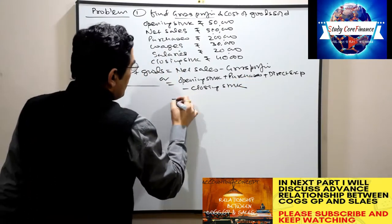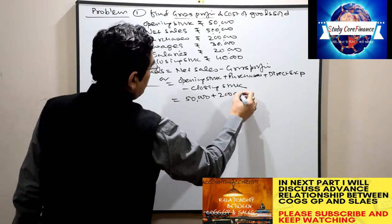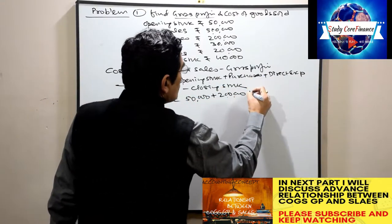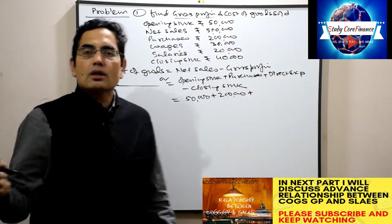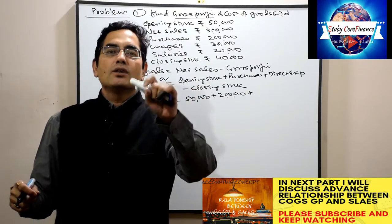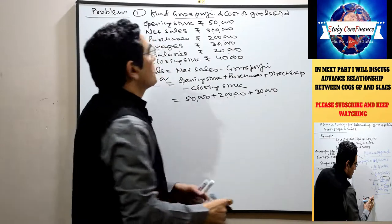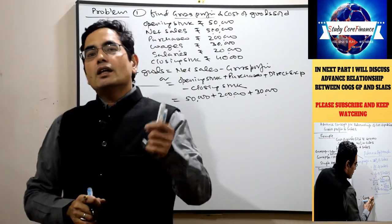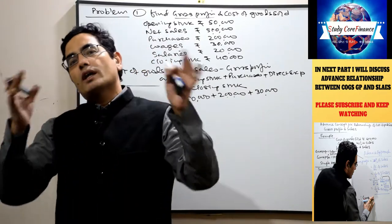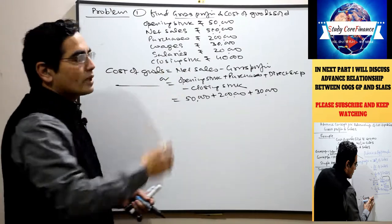Cost of goods sold equals net sales minus gross profit — but we can't use that formula because we don't have gross profit. So the other formula is: opening stock plus purchases plus direct expenses minus closing stock. Now, opening stock is 50,000, purchases are 2,00,000. For direct expenses, wages and salary are given. Only wages are a direct expense — those costs attributable to manufacturing. Salary is treated as an indirect expense — a post-production expense used in office administration, selling and distribution.